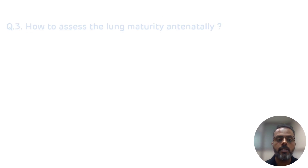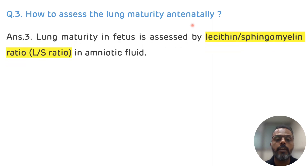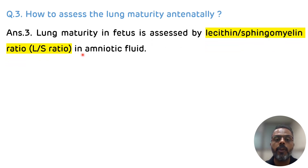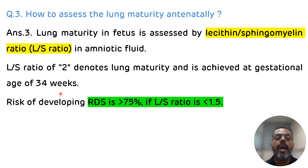The third question is: how to assess lung maturity antenatally? Lung maturity in the fetus can be assessed by measuring the lecithin-sphingomyelin (L/S) ratio in amniotic fluid. If the L/S ratio is greater than 2, it indicates lung maturity, which is achieved at a gestational age of 34 weeks. The risk of developing RDS increases by 75% if the L/S ratio is less than 1.5.